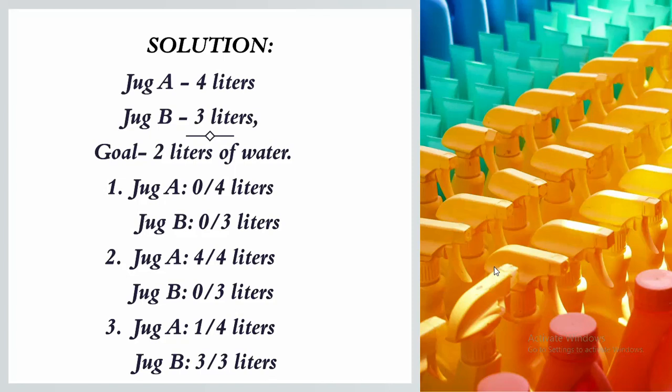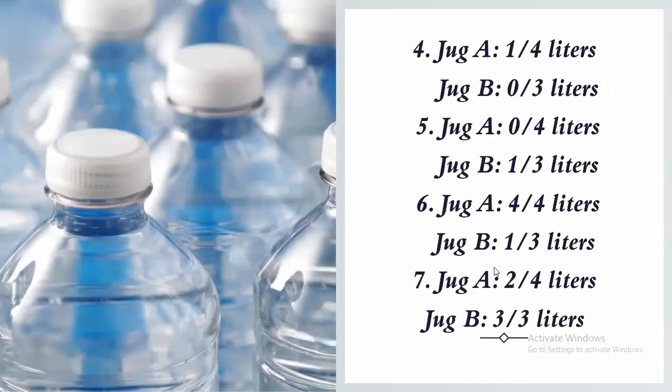In the second step, fill jug A with water from the supply, which is of four liters. In the third step, pour the water from jug A into jug B. In the fourth step, empty the contents of jug B.